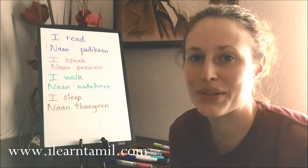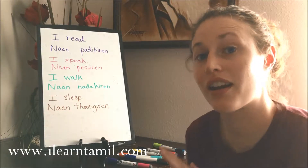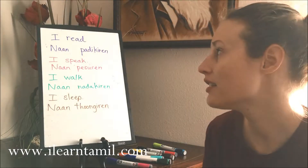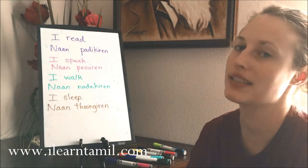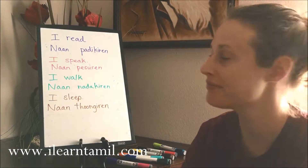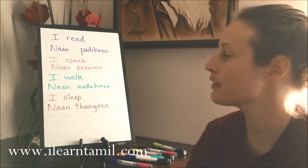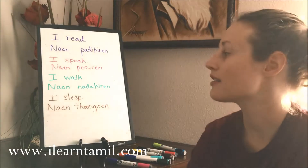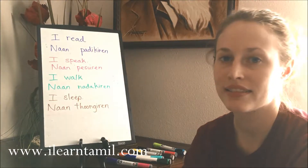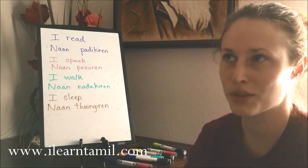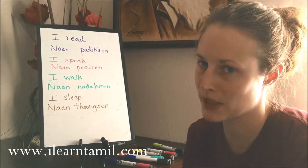We are going to go ahead and do the last four verbs that we have learned with our word for I, which is 'na'. So in order to say I read, I would say 'na parikere'. I speak: 'na pesere'. I walk: 'na nadakere'. I sleep: 'na tungire' — tungire. And as you can see, I am not an expert at all of these.